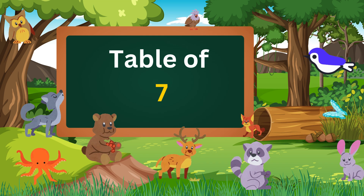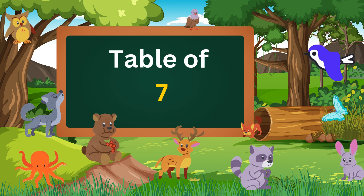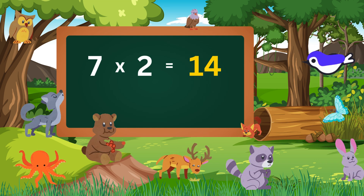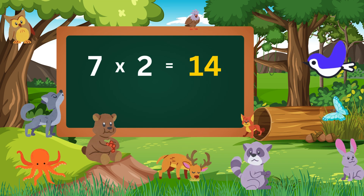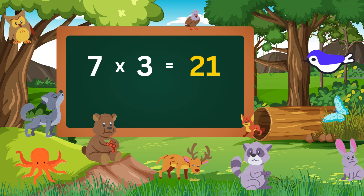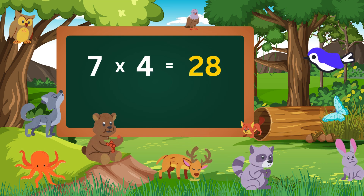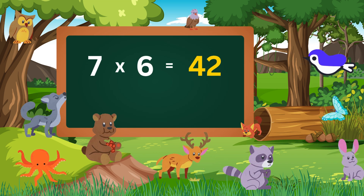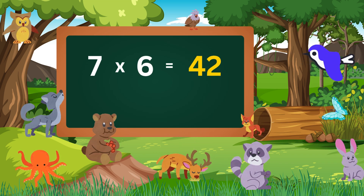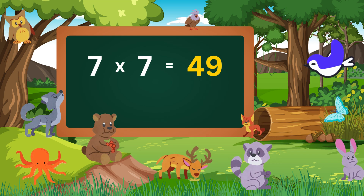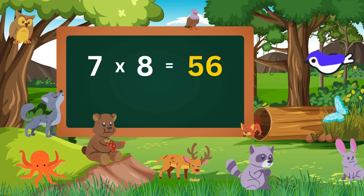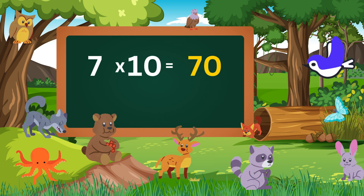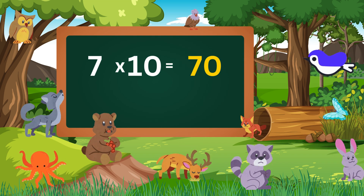Table of seven. Seven ones are seven. Seven twos are fourteen. Seven threes are twenty-one. Seven fours are twenty-eight. Seven fives are thirty-five. Seven sixes are forty-two. Seven sevens are forty-nine. Seven eights are fifty-six. Seven nines are sixty-three. Seven tens are seventy.